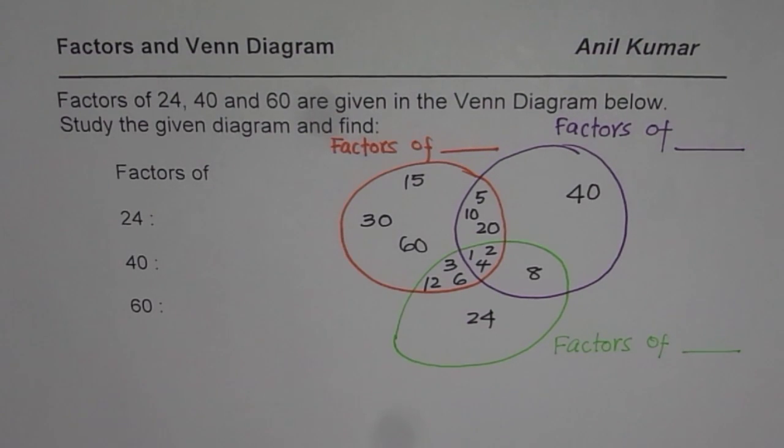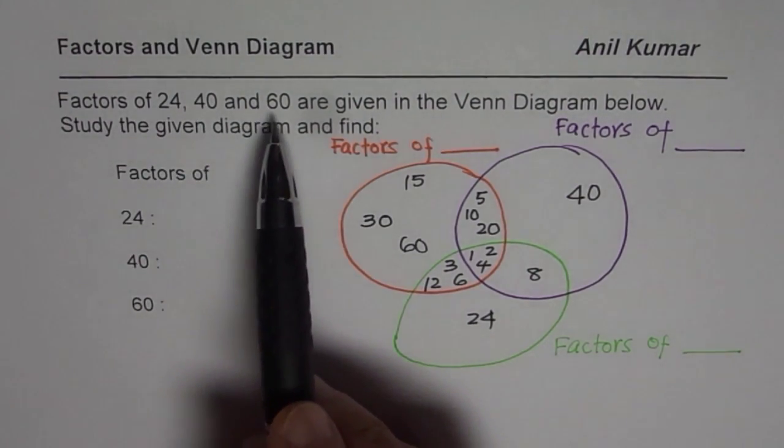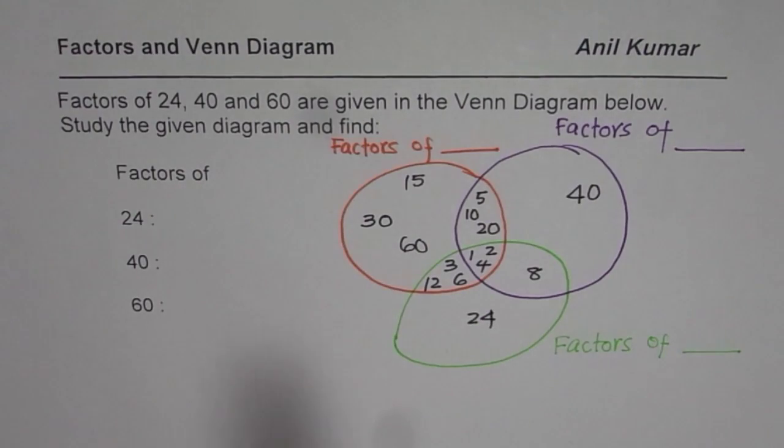I am Anil Kumar and here is a test question for you on factors and Venn diagram. The question is, factors of 24, 40 and 60 are given in the Venn diagram below.